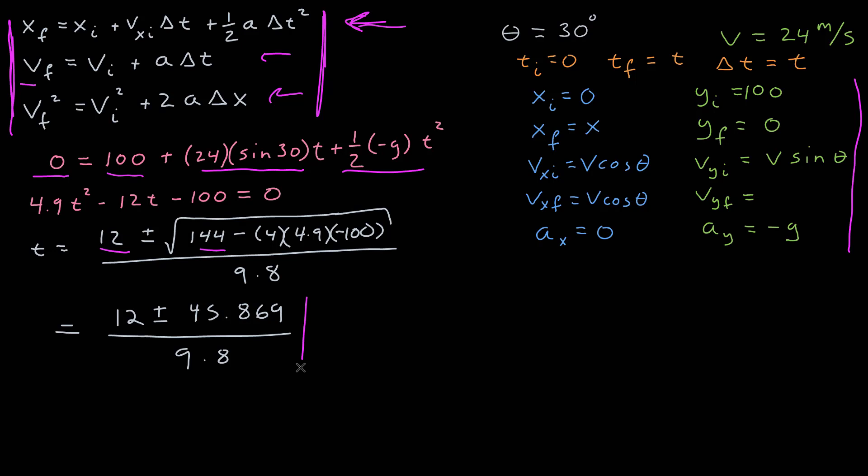I put those numbers into my calculator, and I get 12 plus or minus nearly 46 divided by 9.8. Now, if I look at those possibilities, of course, one of those is going to be negative. And I must have a time greater than zero, so I know I have to choose the one with the plus sign. And my calculator shows that that gives me a time of 5.9 seconds.